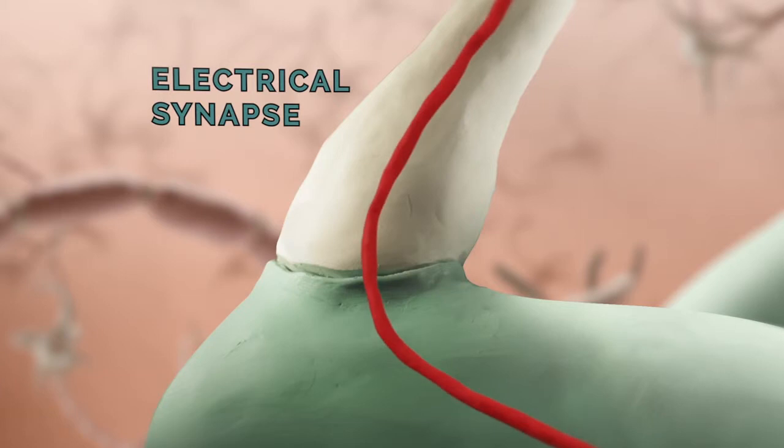The heart relies on this phenomenon in order to beat in unison. The heart muscle cells fire action potentials not unlike those fired by neurons. The electrical synapses between the heart muscle cells enable them to fire synchronously, organizing their contraction into a unified, purposeful beat.